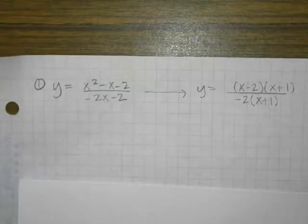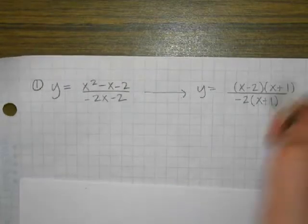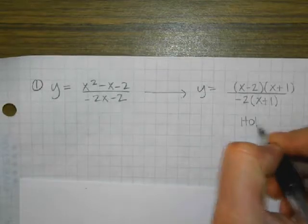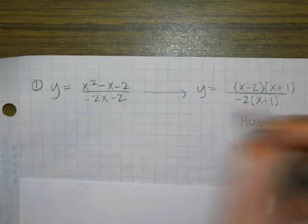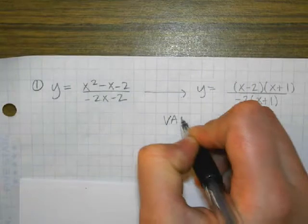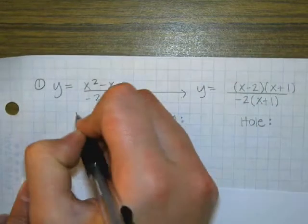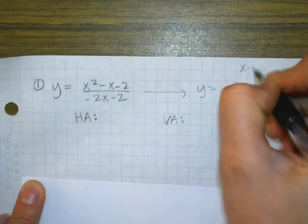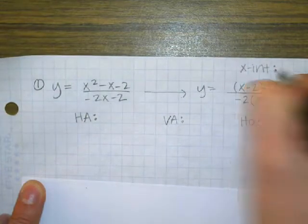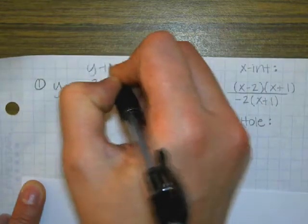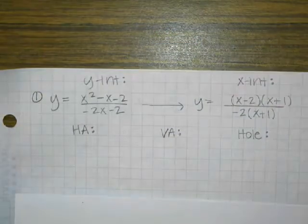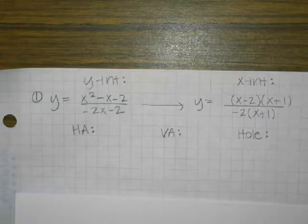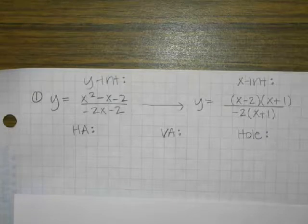So based off the sheet that we used yesterday, they asked us to find the hole, the VA, the VA — X minus 1 — and the HA — Y minus 1. So even if you don't have the sheet we used yesterday, you can still find the stuff in the same order and write it in the same kind of area so that it's less confusing.